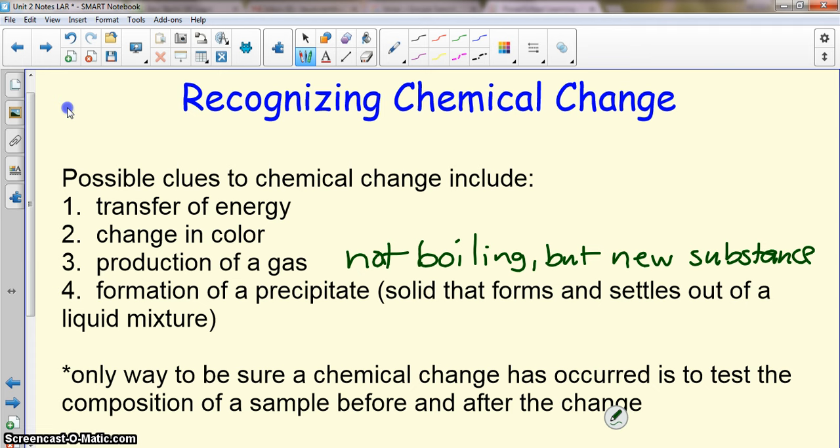Lastly, we might see production of a precipitate. A solid can form by combining two different solutions. Remember, homogenous mixtures. And if you get a solid form, that's a new substance that's a new state of matter than what we had before.